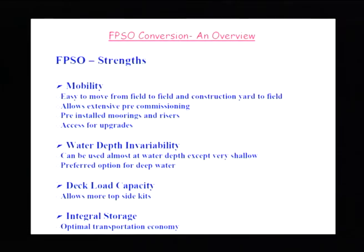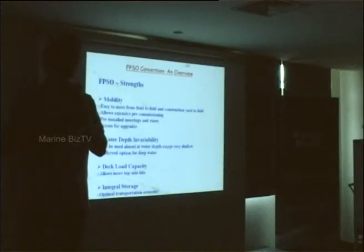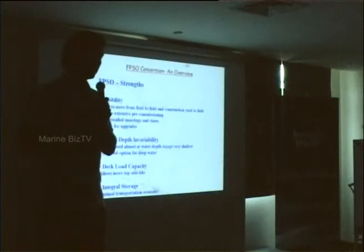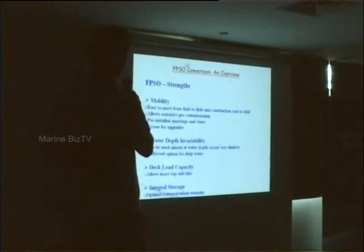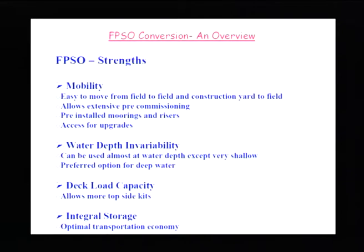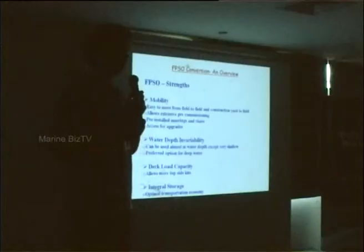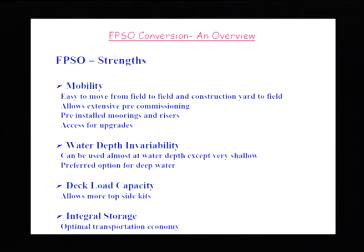Other strengths include mobility — it is easy to move from field to field. For example, Deep Producer 1, currently in Dubai Dry Docks, will be used as a well test unit and travel from field to field after testing one location. It also has a dynamic positioning system. Other advantages include allowing extensive pre-commissioning, pre-installed mooring and risers, access for upgrades due to large deck space, water depth invariability, high deck load capacity because this is a tanker with a strong deck, and integral storage.